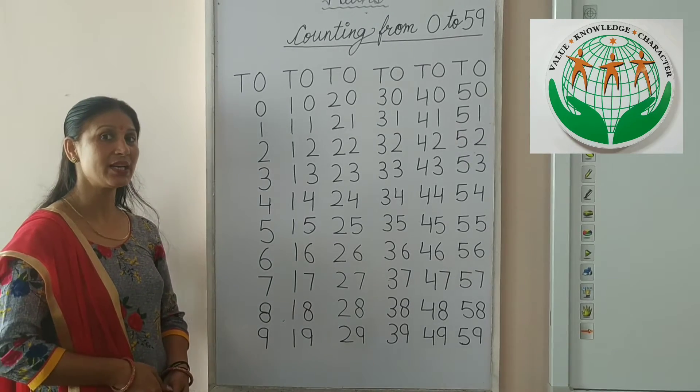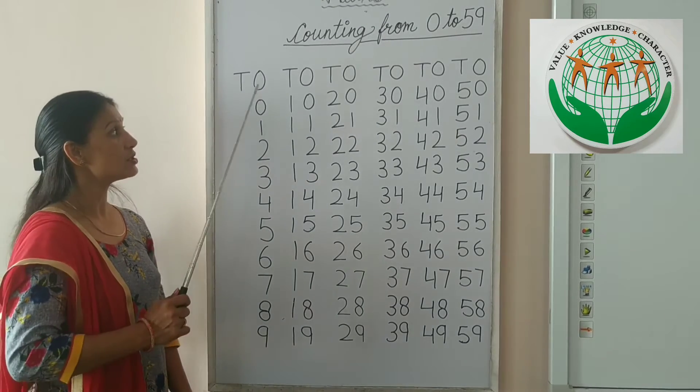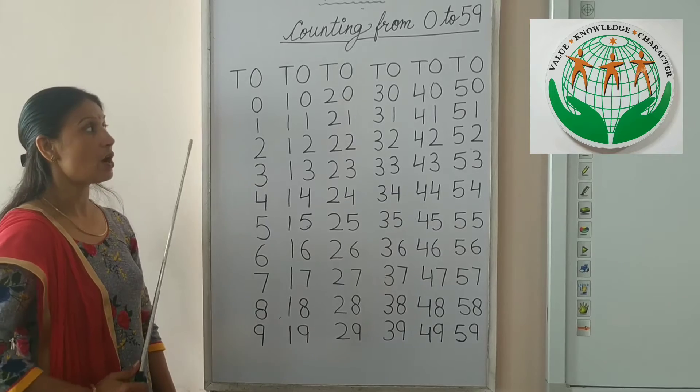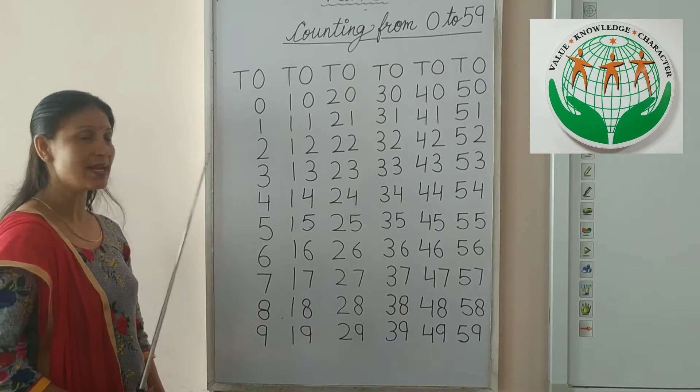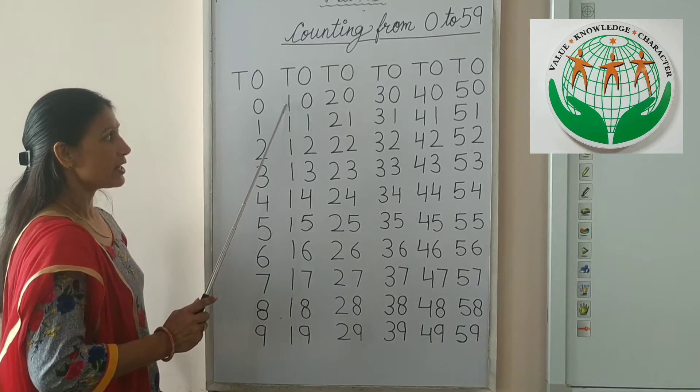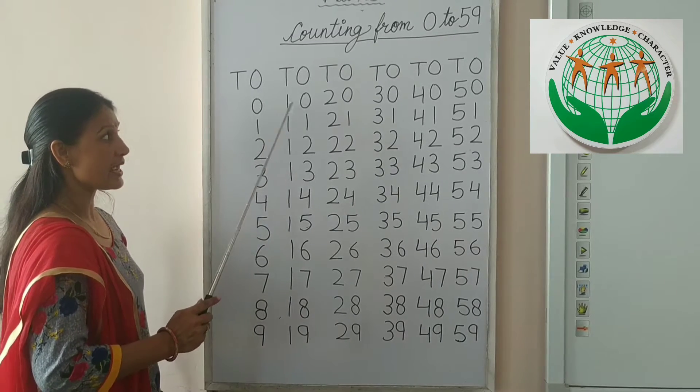Kids, how many digits have I counted? Up to 9. Now come to the next line. After 9 comes 10.